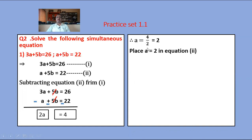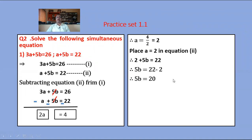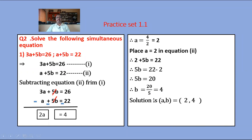Substitute the value a equals 2 in equation 2: a plus 5b equals 22. So 2 plus 5b equals 22. Moving 2 to the RHS: 5b equals 22 minus 2 equals 20. Dividing: b equals 20 upon 5 equals 4. Hence the solution of the given simultaneous equation is a equals 2 and b equals 4.